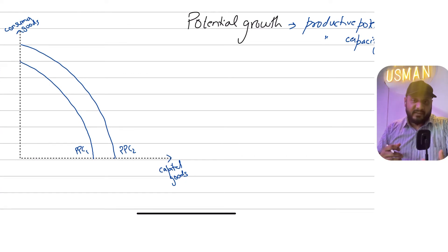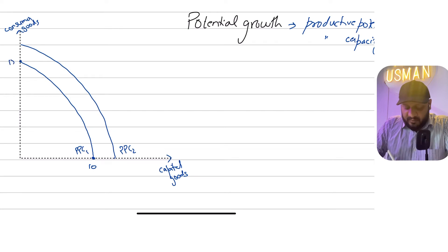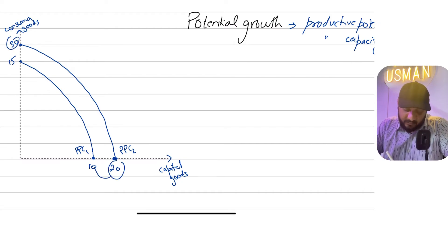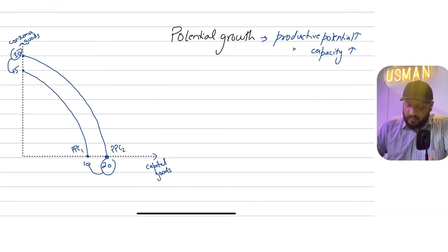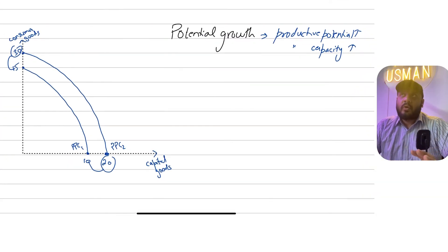I'm not going to discuss the factors that cause potential growth here, as there's a separate video for that. To illustrate: suppose your capacity to produce capital goods was 10 units and consumer goods was 15. After the outward shift in PPC, capacity rises from 10 to 20 for capital goods and from 15 to 30 for consumer goods. That's potential growth — the economy's productive capacity has gone up.